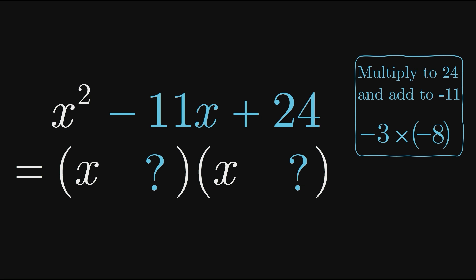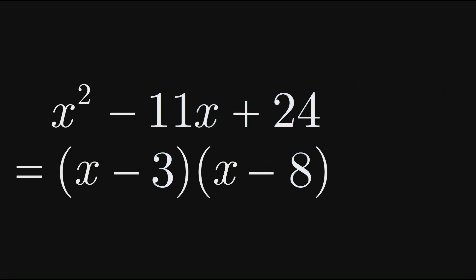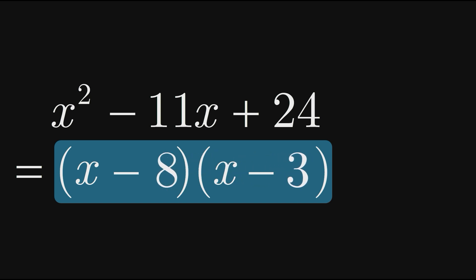So, the constant terms in our factors are negative 3 and negative 8. And we can write the final factored expression simply as x minus 3 times x minus 8, or x minus 8 times x minus 3.